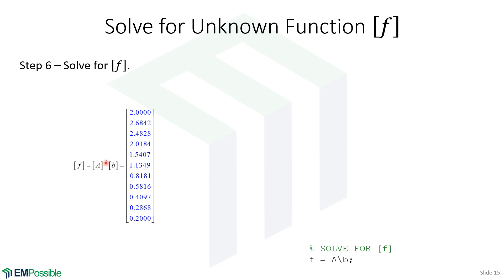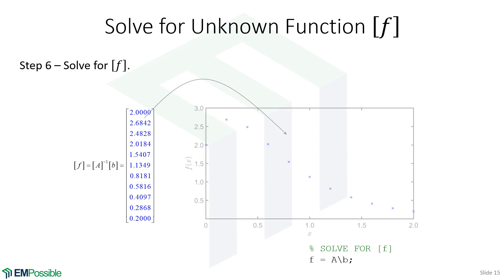We solve this as f equals A inverse b — but remember we're not actually calculating an inverse. Any time in code you're calculating an inverse of a matrix, triple or quadruple rethink that, because it's incredibly rare to calculate matrix inverses. So f equals A backslash b — the shortest line of code in your whole program, but computationally the most expensive. Not so much for an 11-point grid, but for grids with tens of thousands of points this line still looks the same but runs the slowest. Once done, we have our answer and we plot it.